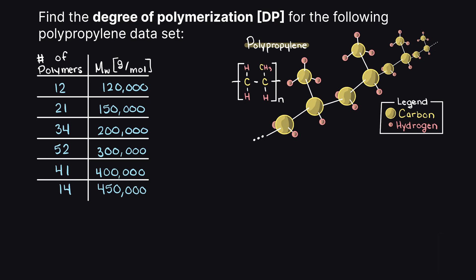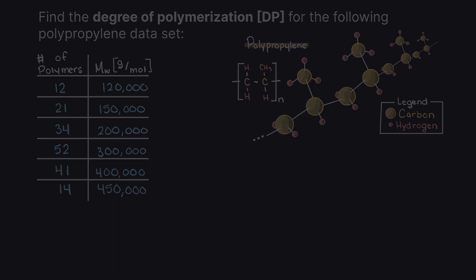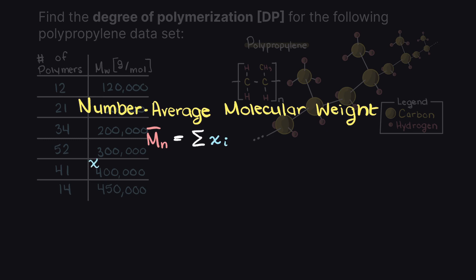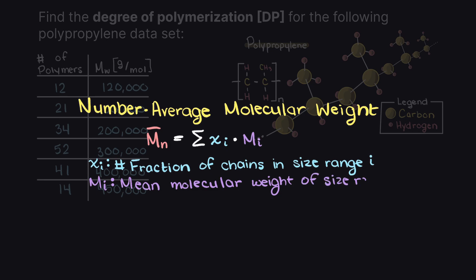So, let's begin by solving for the number average molecular weight of this polypropylene dataset. The number average molecular weight formula is presented here. It is saying that the statistical mean, or average polymer molecular weight, is equal to the sum of the number fraction of each of our ranges times the molecular weight of each range.